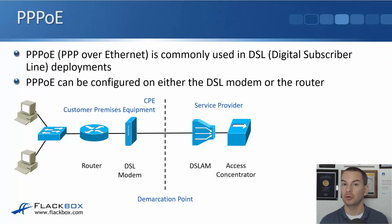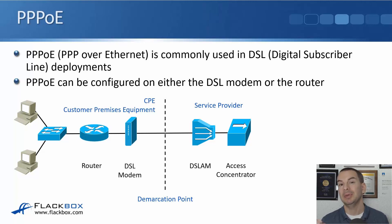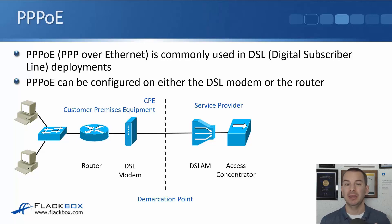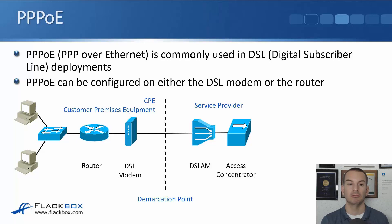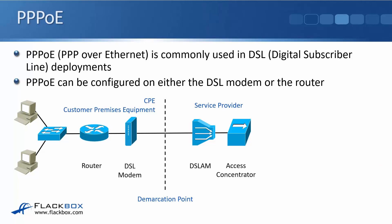PPPoE, PPP over Ethernet, is commonly used in DSL deployments. PPPoE can be configured on either the DSL modem or on the router. Usually it's configured on the modem, so you don't have to do anything special on the router, but depending on your country, it may be common to do it on the router. That's everything for this lecture.